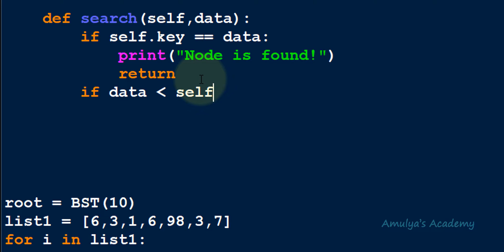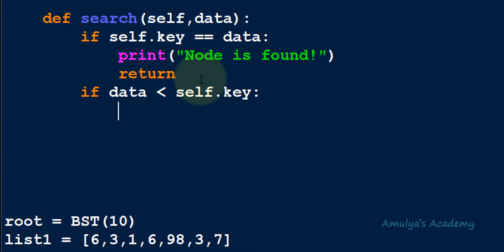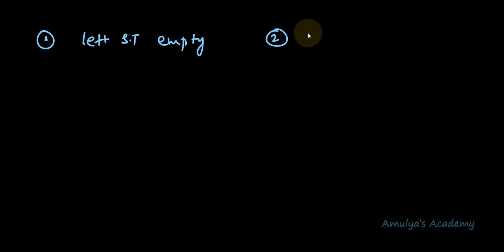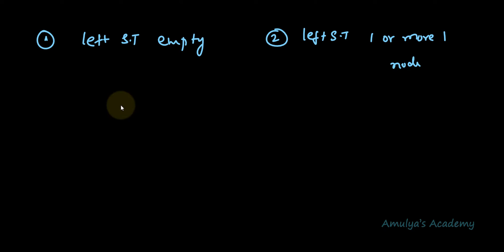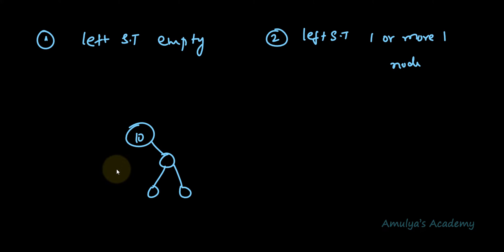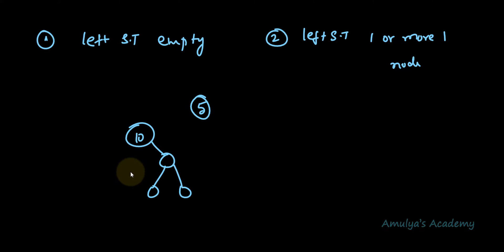If data is not equal, we check if data is less than self.key, meaning we should search in the left subtree. In the left subtree we may face two situations: the left subtree can be empty, or it can contain one or more nodes. For example, if a tree has no left subtree and we search for 5, we compare 10 with 5 — data is less than 10, so we look left, but there is no left subtree, so we print 'node is not present in the tree'.